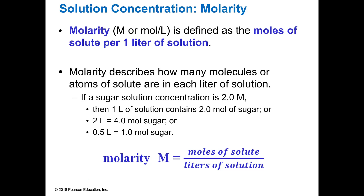Molarity is what we used earlier, and it's abbreviated by capital M. The units are moles of solute per liter of solution. This is the one you typically see — 1.0 M or whatever. For example, if you have a 2 molar solution of sugar, that means you have 2 moles of sugar in 1 liter of solution. If you had 2 liters of solution, you'd have 4 moles. If you had half a liter, you'd only have 1 mole. So the proportion stays the same.